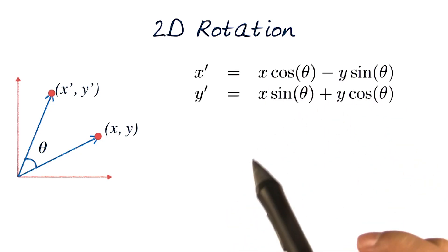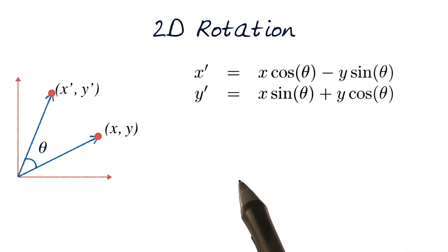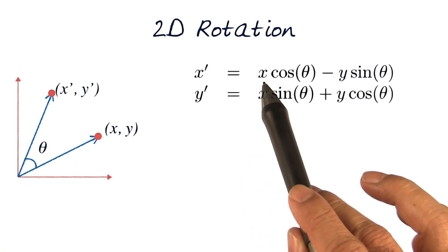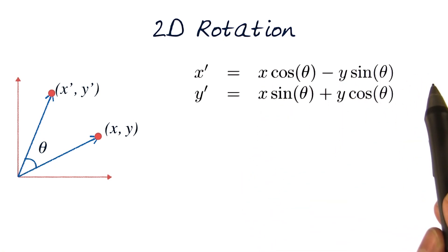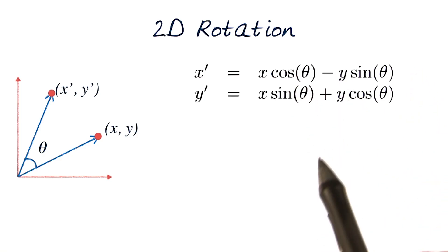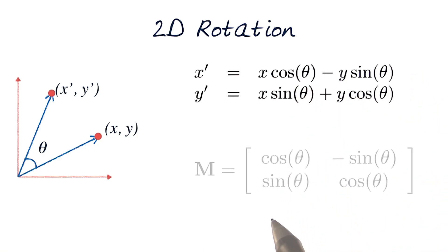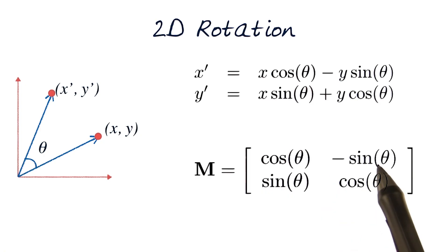This gives us an interesting way. I can write this in a matrix form, which would mean I move x and y into a column, giving me the elements of the M matrix. So M in this case would be cosine theta, minus sine theta, sine theta, cosine theta.